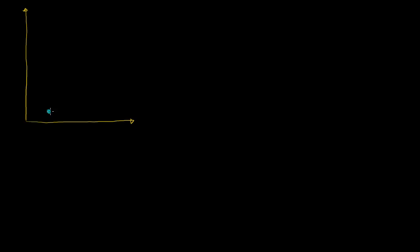Let me draw them in different colors. Let's say I have this point right over here, and that coordinate is (x₁, y₁). And then let's say I have another point over here with coordinates (x₂, y₂). I could keep adding points — we have a ton of points. And we go all the way to the nth point, which we'll call (xₙ, yₙ).